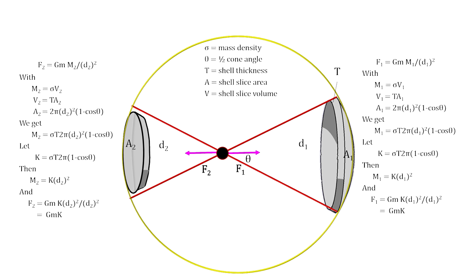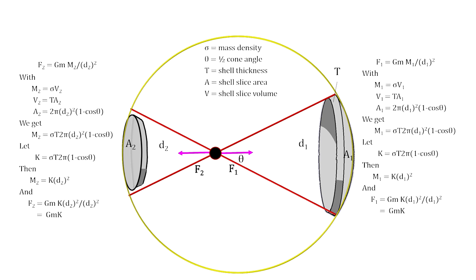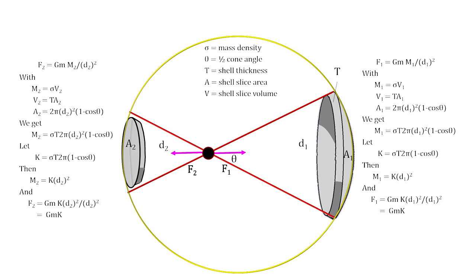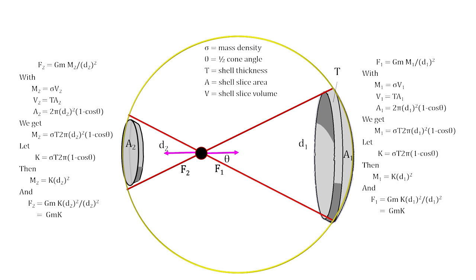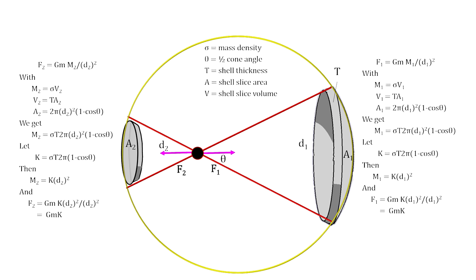Now move the object towards one side and away from the other. On the right side, the number of molecules exerting a force is increasing by the square of the distance. At the same time, the force from each molecule is decreasing by the square of the distance. The reverse is happening on the left side. The forces continue to cancel each other out. The total force remains equal to zero.